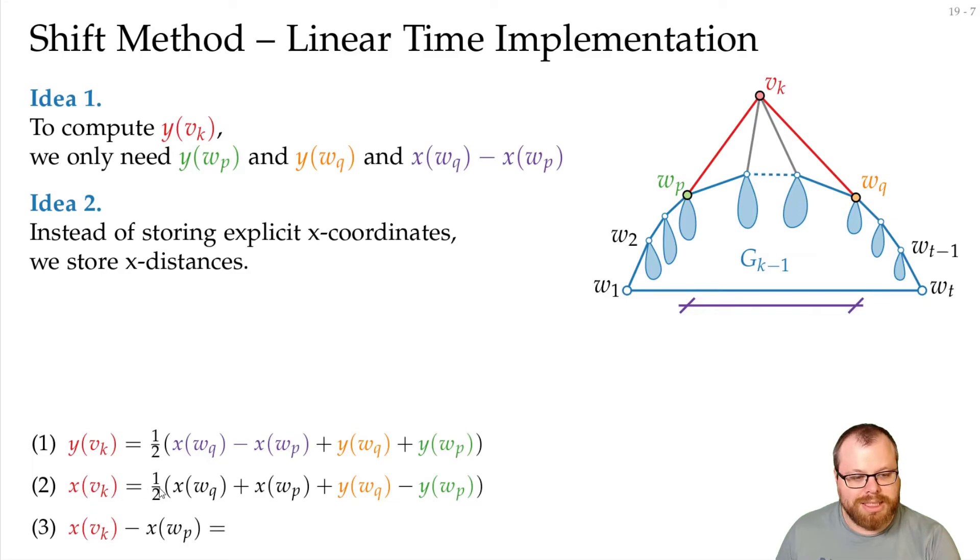Well, we can just take this whole thing and remove W_p from it. And then instead of plus one-half W_p here, we have a minus. And that again is our x coordinate difference. So we can calculate the distance between W_p and V_k by just knowing the distance between W_p and W_q.